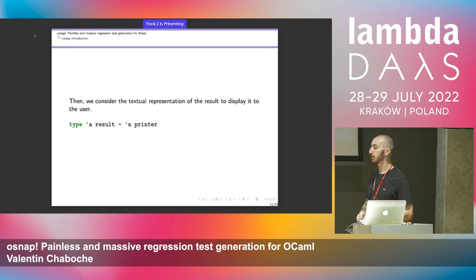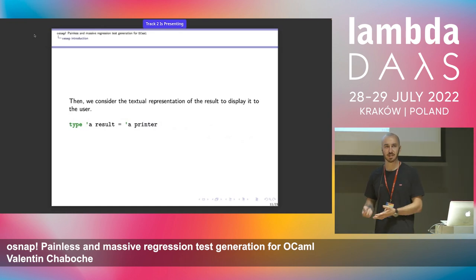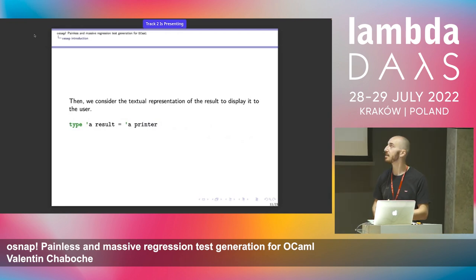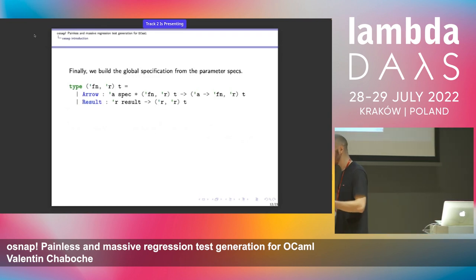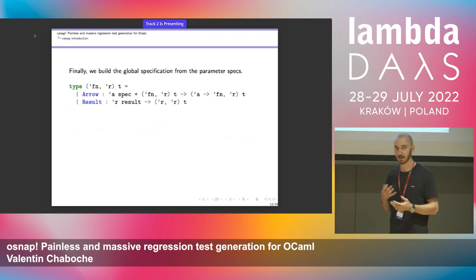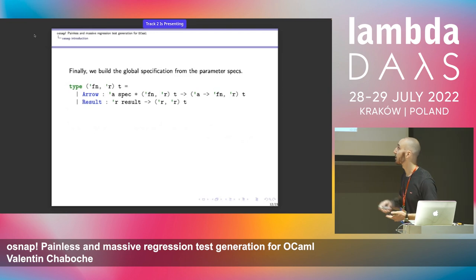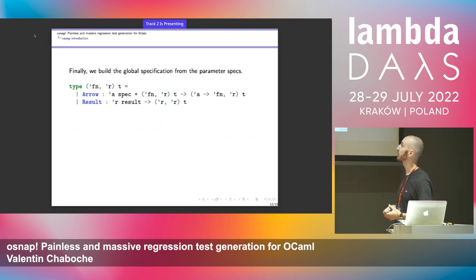Now that you have a way to generate values, you need to distinguish the different results. We consider the textual representation of results. We could have used equality functions, but what we wanted to do is use regular diff tactics on the outputs and be able to easily see with your human eyes what was wrong. Now combining these two bricks, you can combine them into a global specification type.